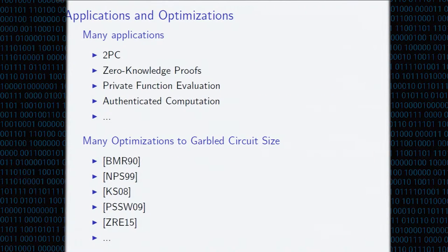So there's a lot of applications, two-party computation, zero-knowledge proofs, private function evaluation. And there have been many optimizations to the garbled circuit size. Why do we care about the size of the circuit? These symmetric key operations that you're performing inside tend to be very cheap. So the main overhead is the communication complexity. And also, the size of the garbled circuit tends to also correspond to the computational complexity of evaluating it. So yeah, there have been a long line of optimizations that tend to give constant factor improvements on the size of the garbled circuit.